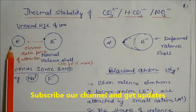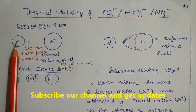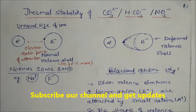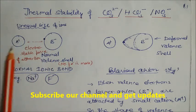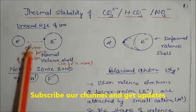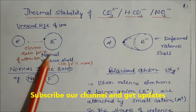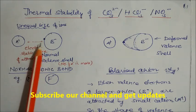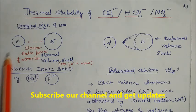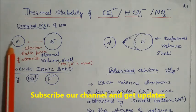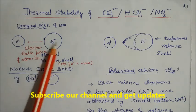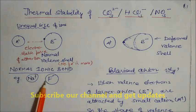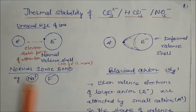This picture shows an ionic compound where A is the cation and B is the anion, attracted by electrostatic force. Both ions have comparable sizes — for example, sodium plus and F minus both have almost 10 electrons, so their sizes are comparable.